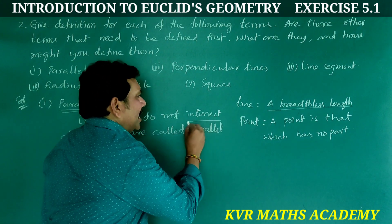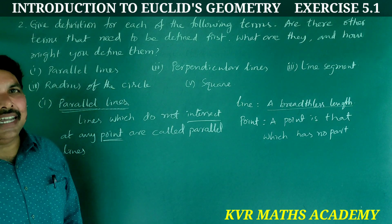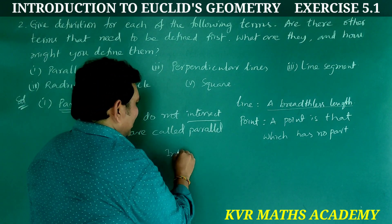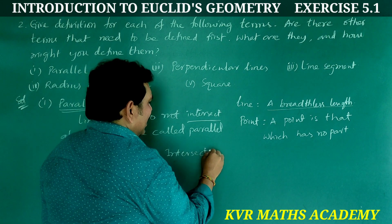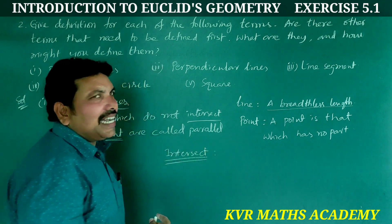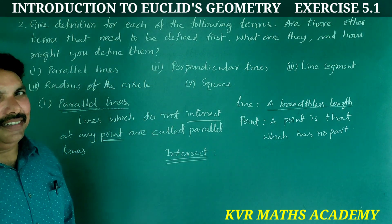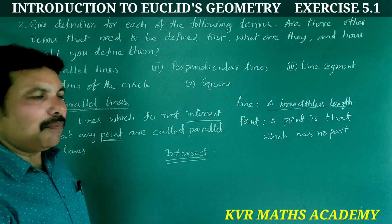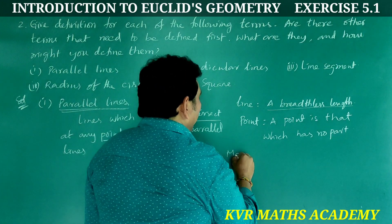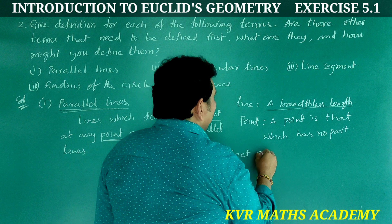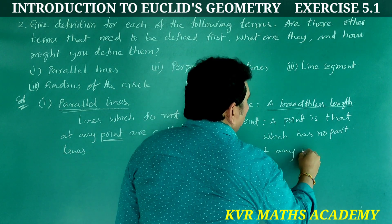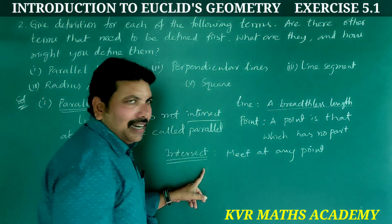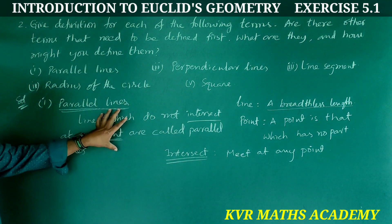What does intersect mean? Intersect means meet at any point. Lines which meet at any point are said to intersect. Parallel lines do not meet at any point.